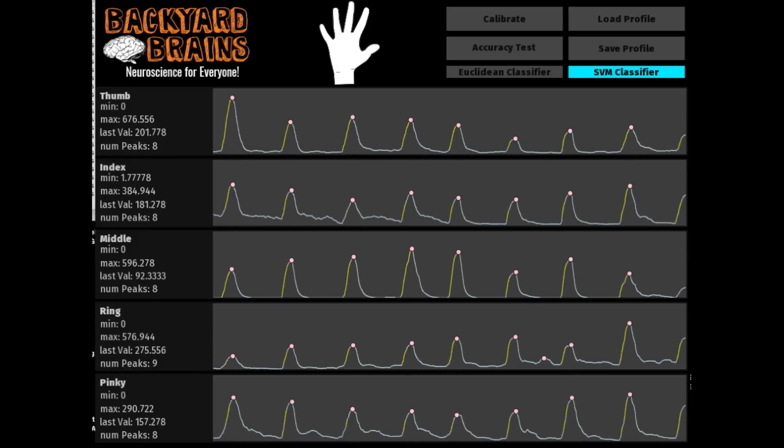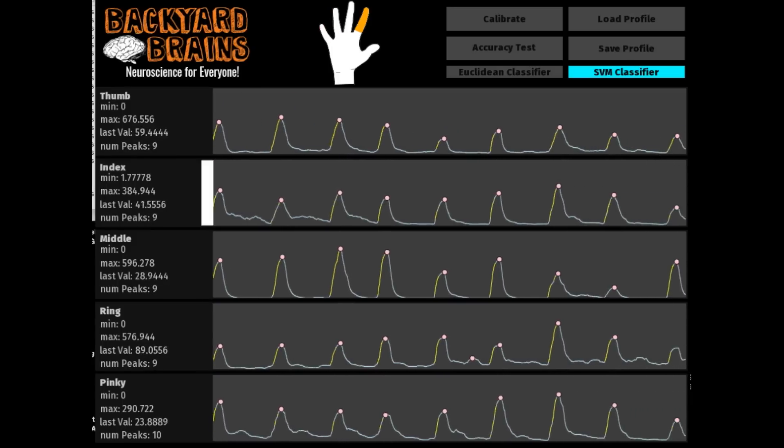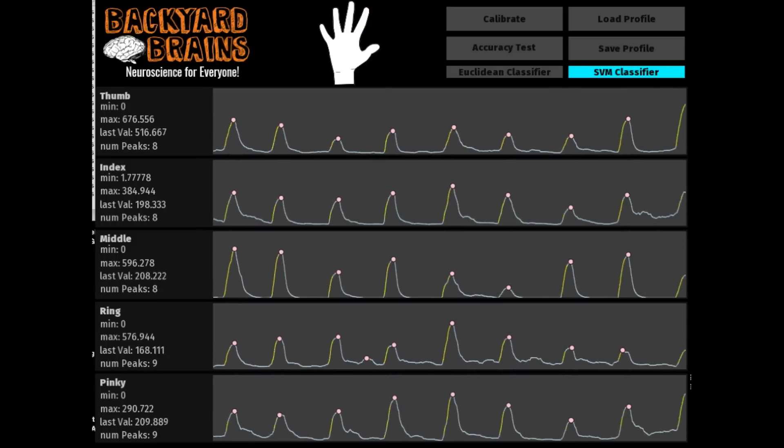After the calibration period, the software then constantly reads the five individual EMG channels and attempts to decode individual finger movements.